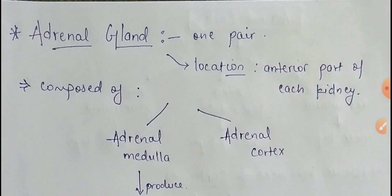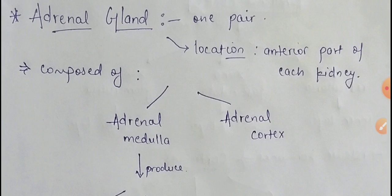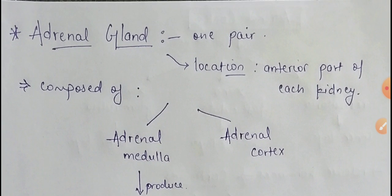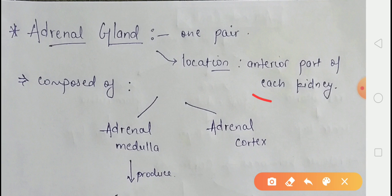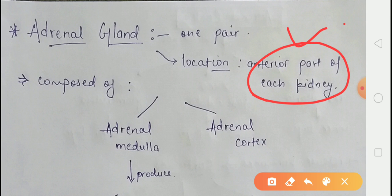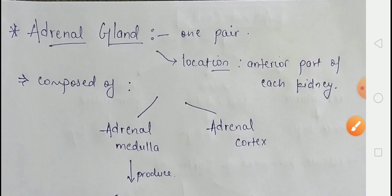First of all we will start with the adrenal gland. Our body has a pair of adrenal glands, located in the interior part of each kidney. The adrenal gland is made up of two types of tissues: one is the adrenal medulla and the other is the adrenal cortex.